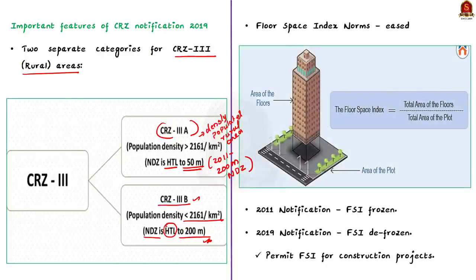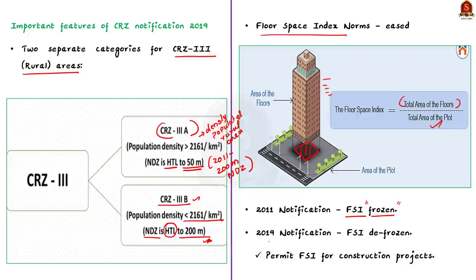The second important feature of the CRZ 2019 notification is the floor space index norms. Floor space index is the ratio between the total area of floors built in a plot and the total area of the plot. Under the 2011 notification, the floor space index had been frozen. But under the 2019 notification, the government decided to defreeze the floor space index and permit it for construction projects.